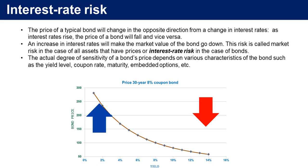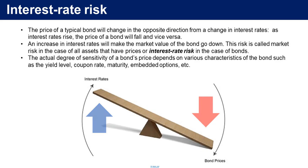Refer to the graph we have presented in a previous video. As you can see, the yield and price have an inverse relationship, which means their values go in opposite directions. So as the yield increases the price falls, and as the yield decreases the price increases. An increase in interest rates will make the market value of the bond go down. This risk is called interest rate risk.